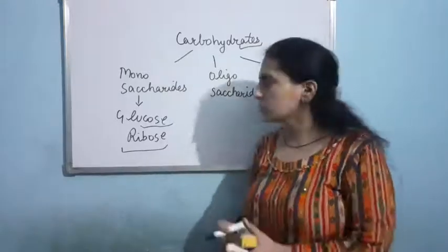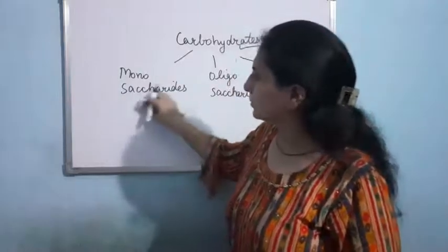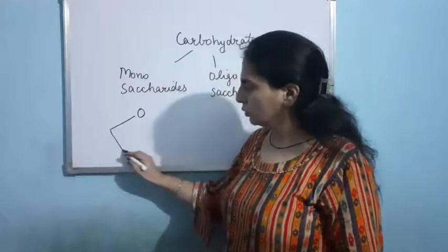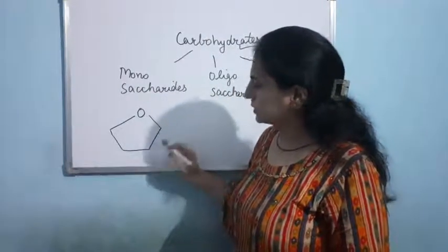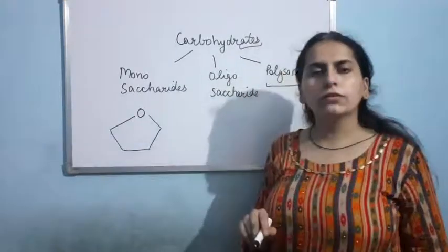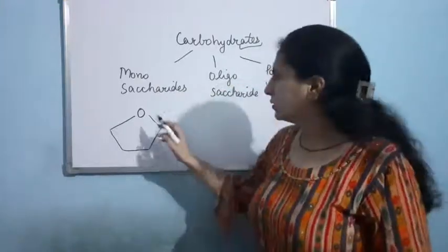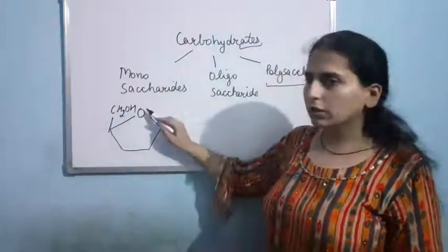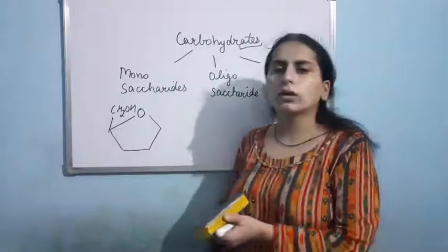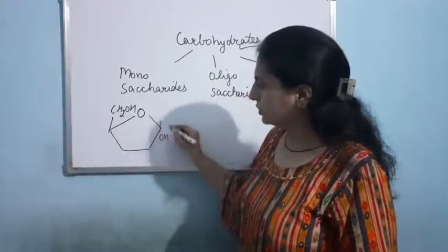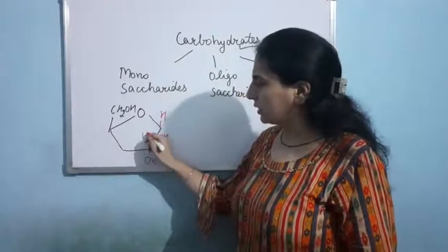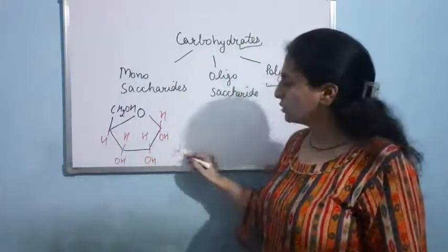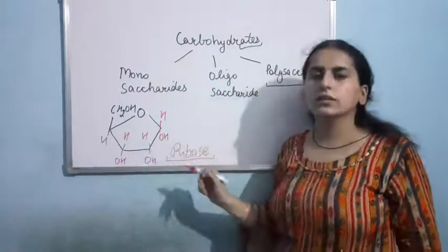Let me draw the structure of ribose and glucose. Ribose has five carbons. It has a ring with an oxygen, four carbons in the ring, and a fifth carbon as CH2OH outside the ring. The OH and H groups are attached to complete the valency. This is a ribose sugar with five carbons in the form of a ring.